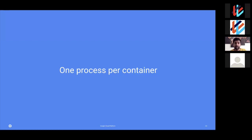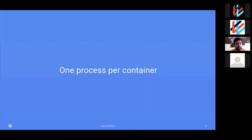Another good practice is one process per container. You can run multiple processes in a container, but it's highly recommended to run just one. Kubernetes and other container orchestrators do health checks based on whether the process is running. If you have 20 processes running in a container, it becomes unclear which one determines health. You can also end up with zombie processes even though the container is technically stopped. I highly recommend running one process per container, and if you need multiple processes that talk together, use the pod concept to run multiple containers — each with one process — grouped together in a pod.